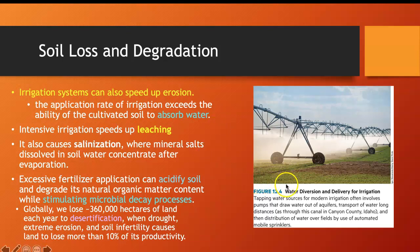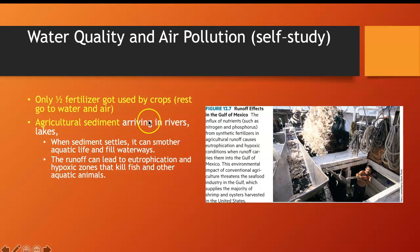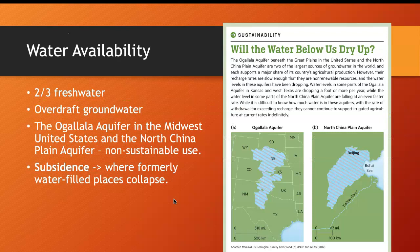Another problem of modern agriculture is contaminating our water. Only half the fertilizer is used by crops; the rest ends up in the air and water, causing eutrophication and depletion of oxygen in the water. We also take so much water for irrigation that we overdraft the aquifers, causing land subsidence. Once the land collapses, the space for generating groundwater is gone, and it is hard to imagine how those aquifers will regenerate — so they are considered non-renewable resources.